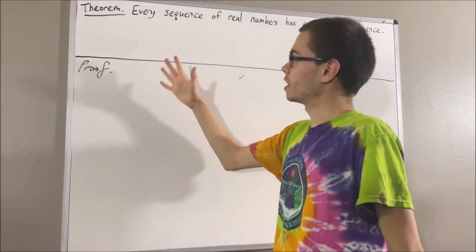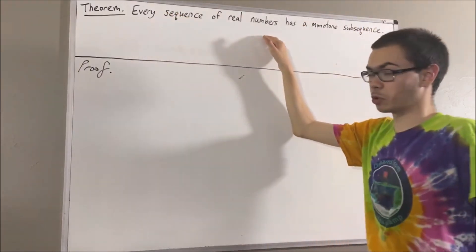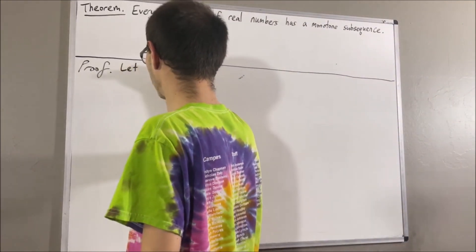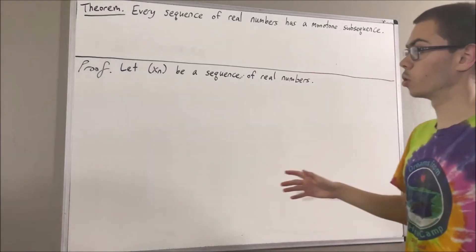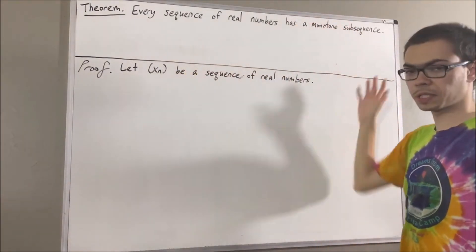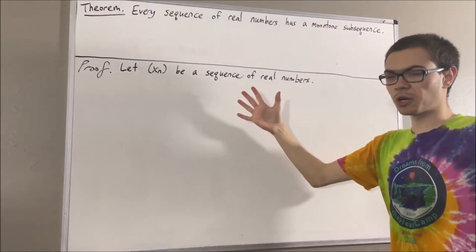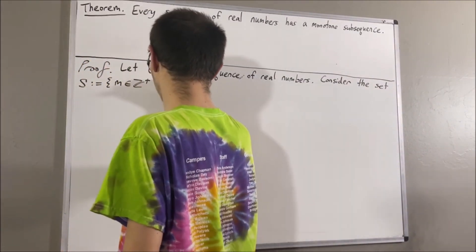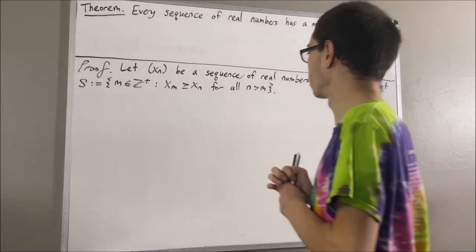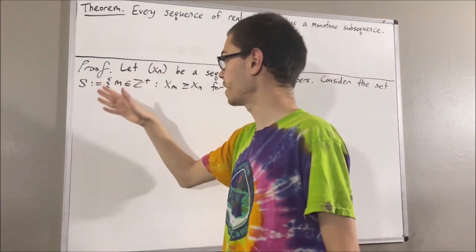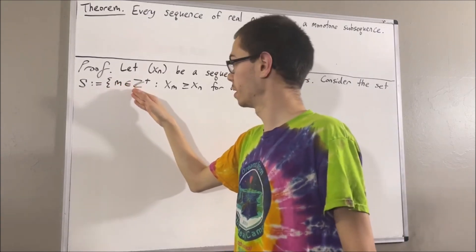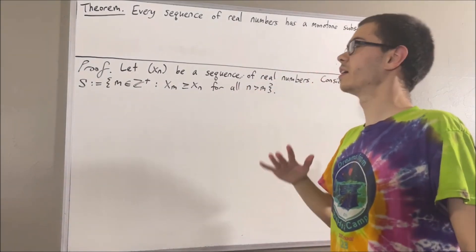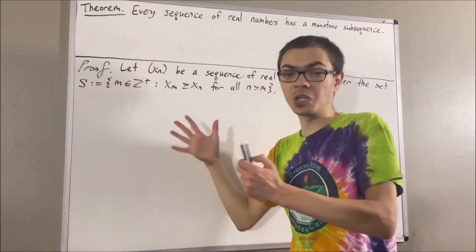To start out the proof, since we're trying to prove a statement about every sequence of real numbers, let's consider an arbitrary sequence of real numbers — I'll call it xn. The goal is to show that xn has a monotone subsequence. To show this, we consider the set S, defined to be the set of all positive integers m such that xm is greater than or equal to xn for all positive integers n greater than m. Now, either S is finite or infinite.